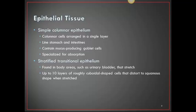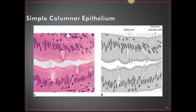Simple columnar epithelium has columnar cells arranged in a single layer. They line the stomach and intestines and contain mucus-producing goblet cells, specializing in absorption. They are frequently found in the stomach, intestines, and some areas of the respiratory and reproductive organs. Stratified transitional epithelium is found in body areas such as the urinary bladder that stretch, with up to ten layers of roughly cuboidal-shaped cells that distort to a squamous shape when stretched. Here is a picture of simple columnar epithelium showing lung nuclei, striated borders, and the goblet cells.